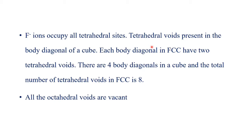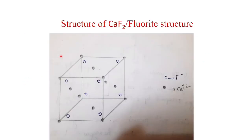F⁻ ions occupy all the tetrahedral voids. Tetrahedral voids are present along the body diagonals of a cube — each body diagonal in an FCC unit cell has two tetrahedral voids. There are four body diagonals in a cube, giving a total of 8 tetrahedral voids. All octahedral voids remain vacant. So fluoride ions occupy all 8 tetrahedral voids.